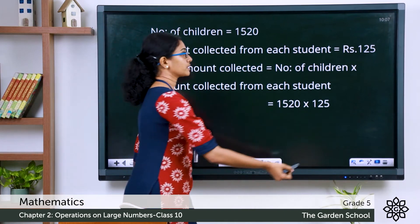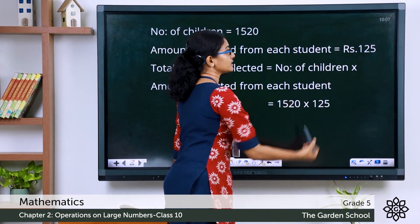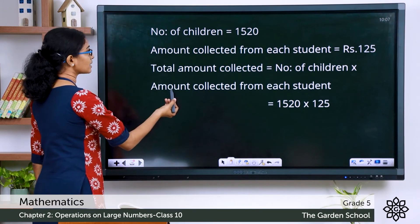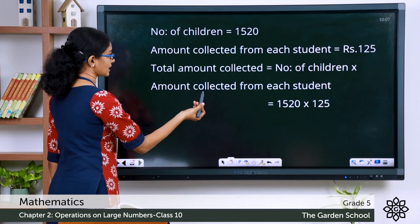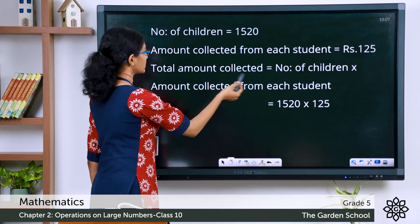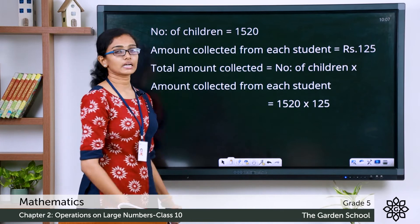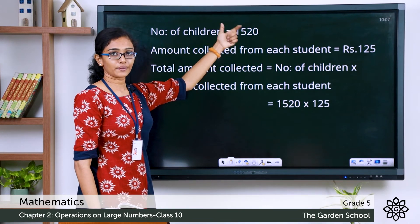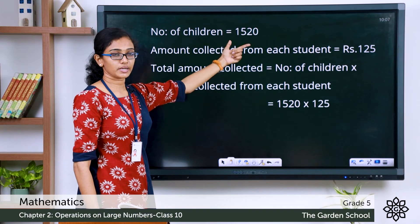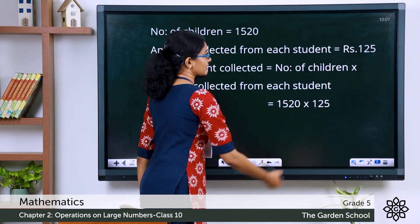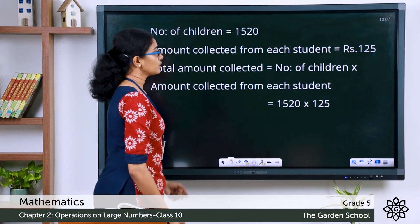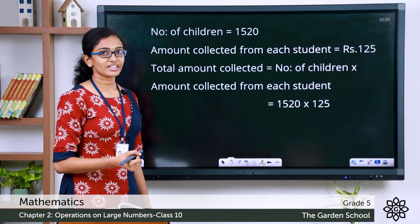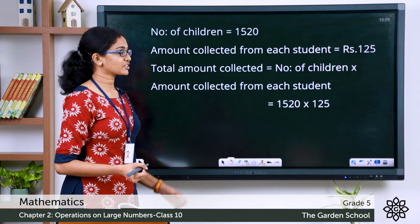From the question, let's write down the steps: amount collected from each student = rupees 125. The total amount collected = number of children × amount collected from each student. The number of children from the question is 1520. So we need to calculate 1520 × 125.